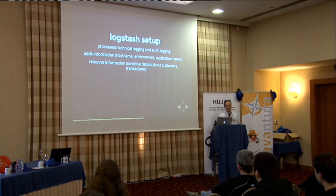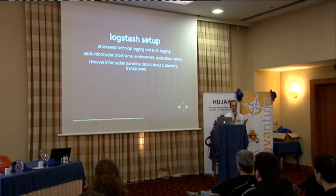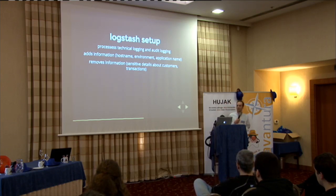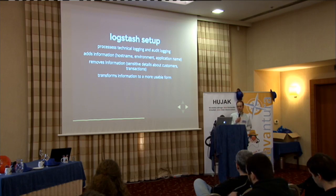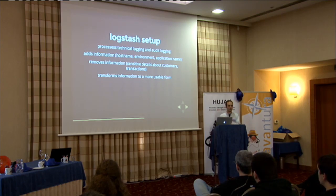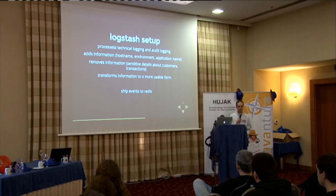We also had Logstash remove information. The audit log contains very detailed information: customer names, bank account numbers, transfers, the description you supply when you create a transfer, and the amount. Monitoring systems aren't secured, so anybody can look at them — you can't have all the details of a transaction there, that would be a big privacy violation. So you have to make sure that information is removed. Some of the log records, especially the audit logging, are transformed into a form better suitable for processing in Elasticsearch, extracting fields, and then Logstash ships the parsed log event into Redis.